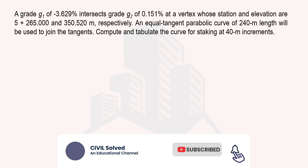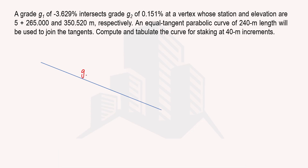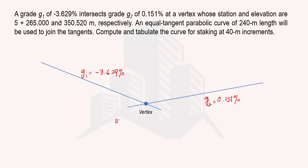We have g1, a negative gradient hence a downward gradient, having a magnitude of minus 3.629 percent. This negative gradient is meeting with a positive gradient g2 of 0.151 percent. The point of intersection of the gradients is called the vertex. At the vertex, the stationing is 5+265 and the elevation is 350.52 meters. We have to stake out this vertical curve at 40-meter increments.